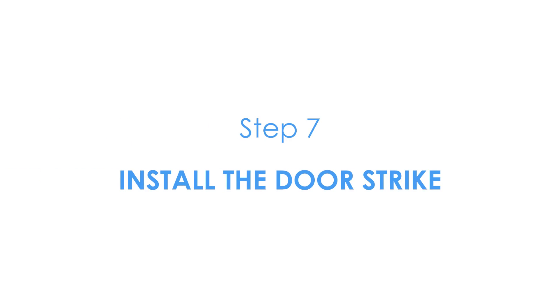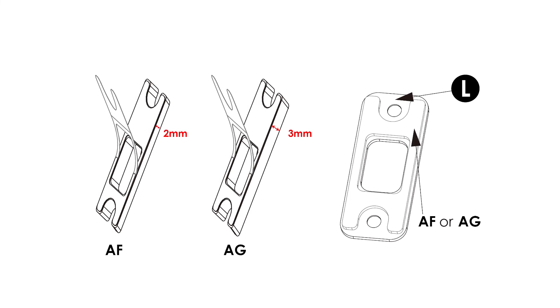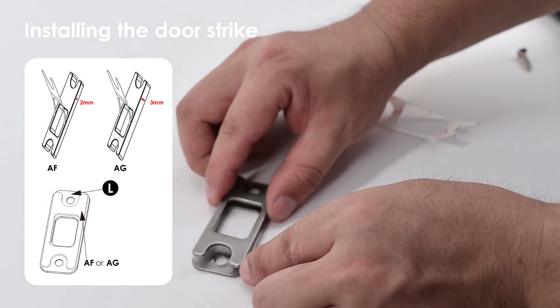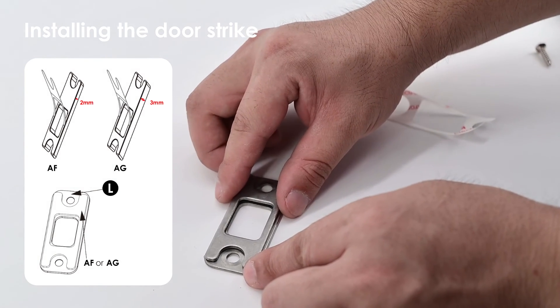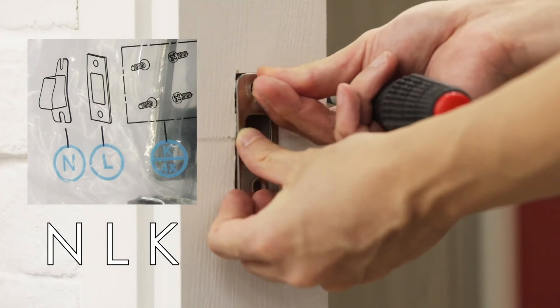Step 7: Installing the door strike. Before installing door strike onto door frame, check the gap between door and door frame should be less than 4.5 millimeters. Attach AF or AG to the strike plate L and H to reduce gap if necessary. Install deadbolt strike plate L and secure with screws K.